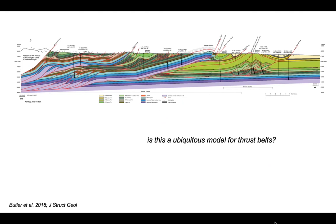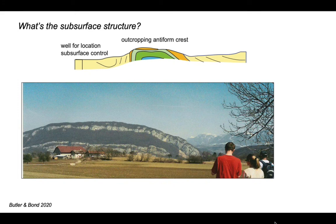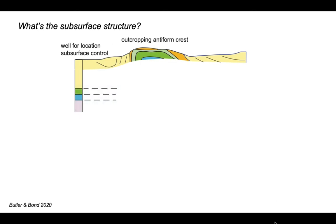So the question we need to ask is: is this thin-skinned model ubiquitous for thrust belts in general? And that's what we're going to explore here. We can start off returning to our fold in the outer part of the French Alps and asking what's the subsurface structure. We can conceptualise the problem where we've got some outcropping fold structure — an antiform seen at the Earth's surface — and we may have additional subsurface control just off the fold structure which may tell us where the layers we see at outcrop exist in the subsurface.